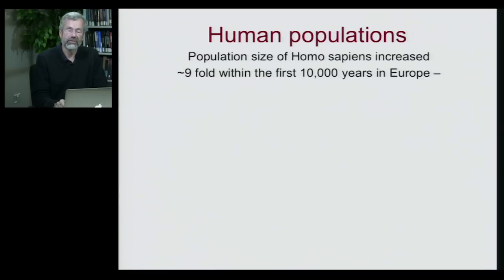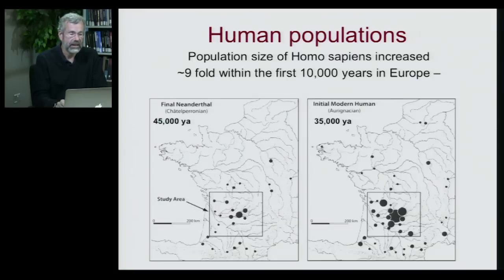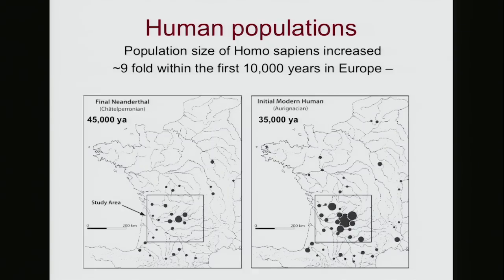What about our own species? Human populations can be estimated all the way back to our first leaving of Africa. Population size of Homo sapiens increased about tenfold in the first 10,000 years that we were in Europe. This map shows a comparison between the number of Neanderthals estimated to have lived in France 45,000 years ago — relatively small communities. And remember, the Neanderthals had been there for a long, long time and still lived in very small communities. Within 10,000 years of humans getting there, our populations were much larger than those of the Neanderthals.